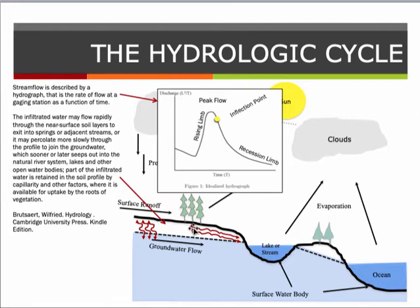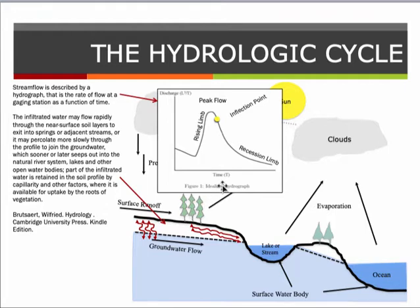Rainfall soaks into the soil surface and works its way to a lake or stream before ever entering the groundwater regime, or it may percolate more slowly through the profile to join the groundwater, which seeps out into natural river systems, lakes, and other open water bodies. Part of infiltrated water is retained in the soil by capillarity and is available for uptake by vegetation roots, returning to the atmosphere through transpiration.